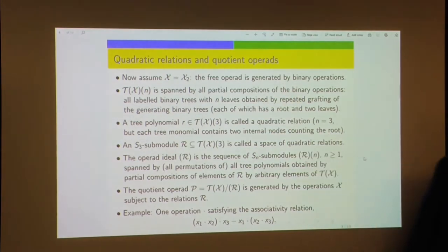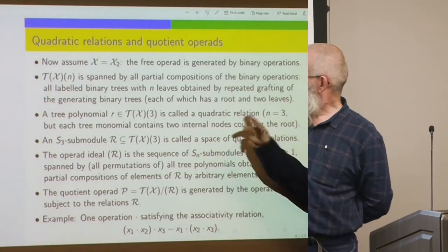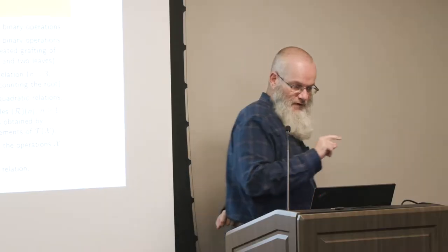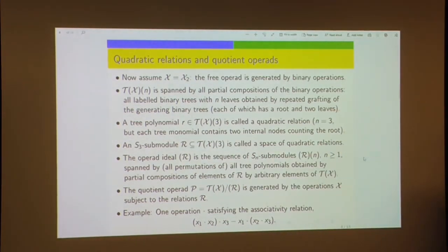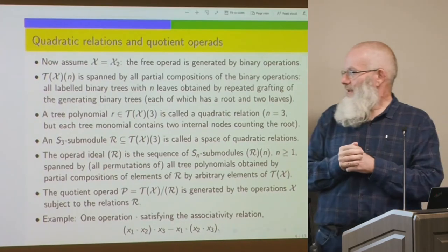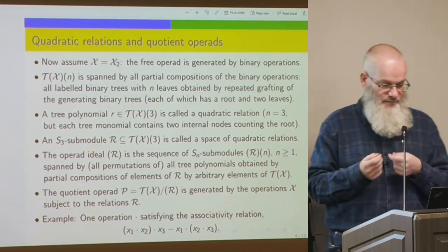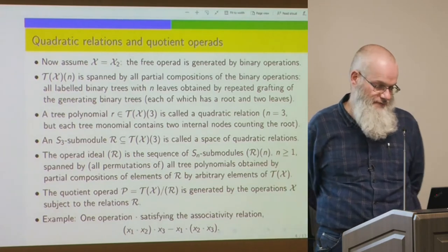Each binary operation is represented by a root with two leaves. Looking at arity 3 — operations with three arguments — these are called quadratic relations in operad terminology. Each tree with three leaves has two internal nodes, two operations. Operad theory focuses on the operations more than the arguments, so quadratic refers to the number of operations. Any S_3 submodule is a space of quadratic relations.